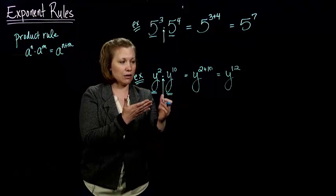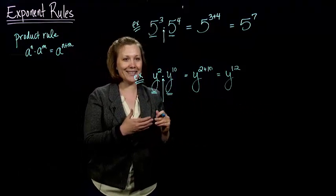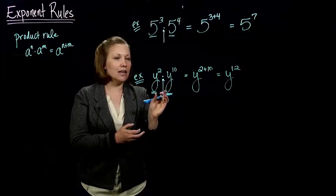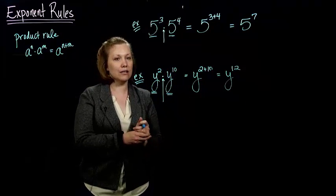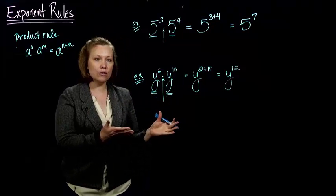And of course, you could get this same answer if you wrote out all of these y's and counted them up. We're just taking a shortcut here by adding these two exponents. So that's how you use the product rule.